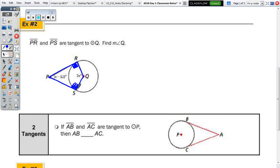360 degrees. Now, if two of those angles are already 90, what's left for the other two, angle RPS and RQS? 180.